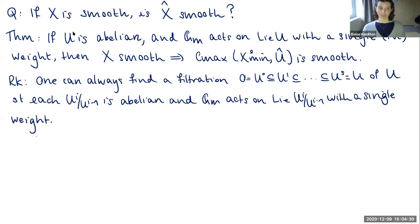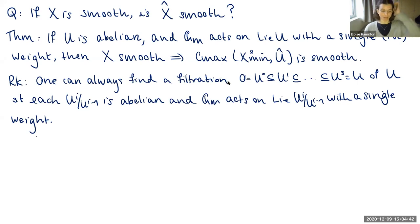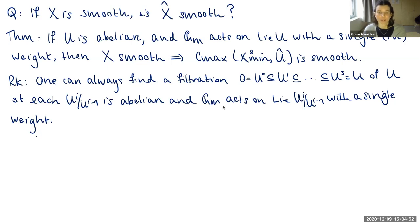The assumption that U is abelian is not so restrictive: if we start with an arbitrary U, we can always find a filtration of U such that each quotient is abelian and G_m acts on the Lie algebra with a single weight. We can then apply the blowup construction iteratively across this filtration, quotienting in stages. At each stage we do the blowup for U₁, then take the quotient by U₁, then look at the action of U₂ mod U₁, and so on. There are some subtleties, but essentially this result about smoothness should be sufficient to give the results in general.